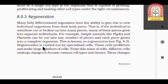Regeneration is carried out by specialized cells. All body cells don't have the ability of performing the process, but specialized cells only can go for the regeneration. The cells proliferate and make large numbers of cells, means they will grow to make the large cell numbers. From this mass of cells, different cells undergo changes to become various cell types and tissues.